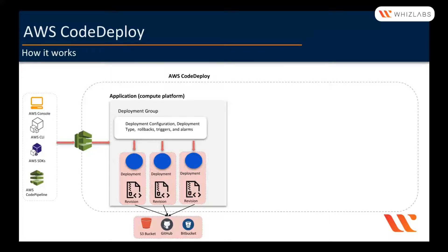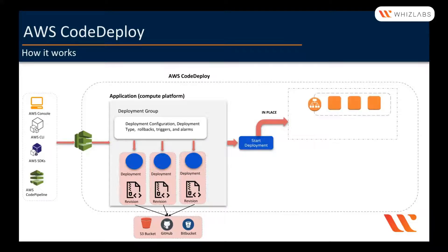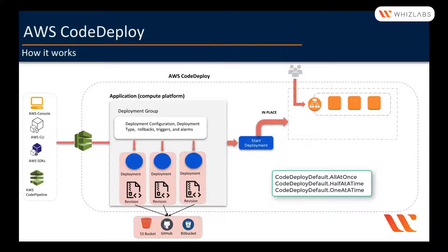Once we create a deployment, CodeDeploy will start the deployment based on the configuration. Let's say we chose in-place deployment, which is only for EC2 and on-premise instances. We have a fleet of EC2 instances under a load balancer serving requests to customers. CodeDeploy will check the deployment configuration. For EC2 instances, the default configurations are: all at once — deployment happens on all instances simultaneously — half at a time, or one at a time. You can also create a custom configuration where you specify how many minimum instances or what percentage you want to keep healthy.